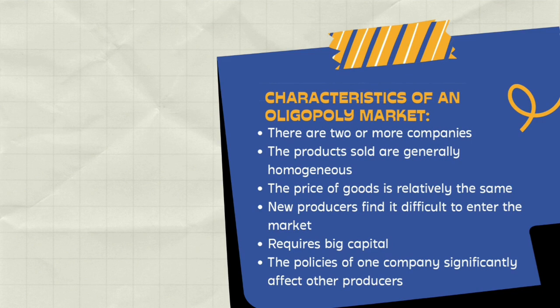The last characteristic is that in an oligopoly market, the policy of the main producer becomes the reference for other producers. Branch manufacturers only carry out policies set by the main producers. Policies that other producers must follow include the withdrawal of old products and replacement by new products, including changes in function, price, and taste.